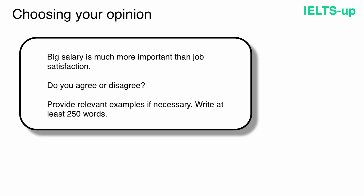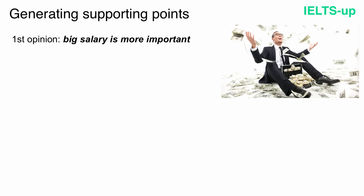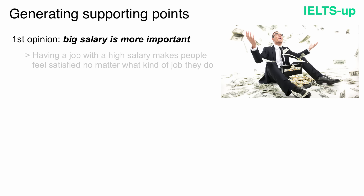Now let's generate supporting points for each of our opinions. Our first opinion: big salary is more important. So what are our supporting ideas? Why can big salary be more important than job satisfaction? Well, having a job with a high salary makes people feel satisfied no matter what kind of job they do. That's our first supporting point.